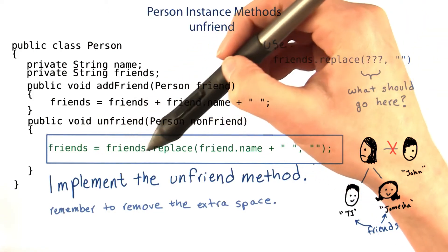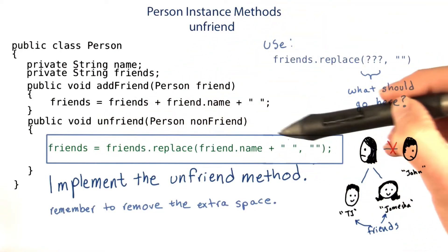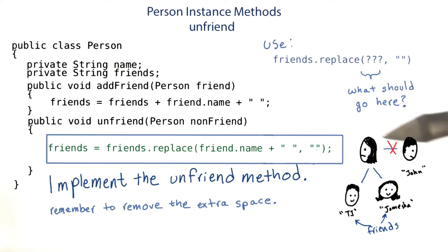The answer is friends equals friends.replace friend name in a space with an empty string. We can look at an example to see how this works.